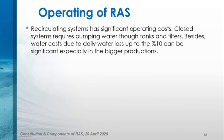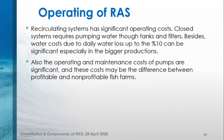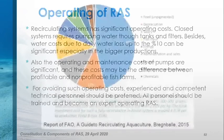Recirculating systems have significant operating costs. Closed systems require pumping water through tanks and filters. Besides water costs, daily water loss up to a certain percentage can be significant, especially in bigger productions. To reduce water use, if you take the daily replenishment water amount from supply, this cost may be affordable considering your production size and profit. Some adjustments can also be done to reduce daily replenishment water amount. The operating and maintenance costs of pumps are significant and may be the difference between a profitable and non-profitable fish farm. To manage such operating costs, experienced and competent technical personnel should be preferred, and personal should be trained and become expert operators.